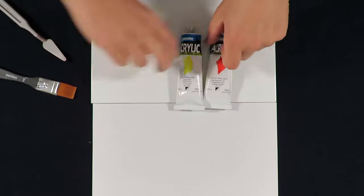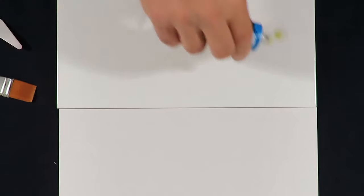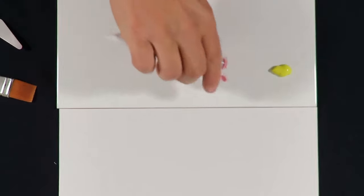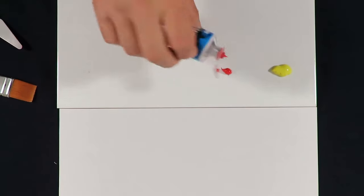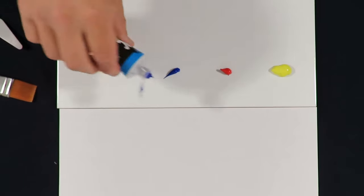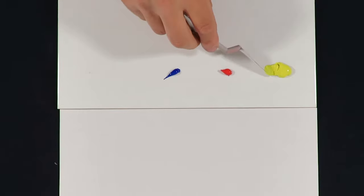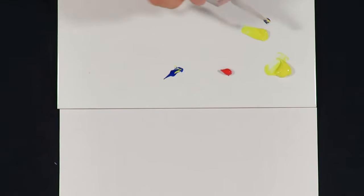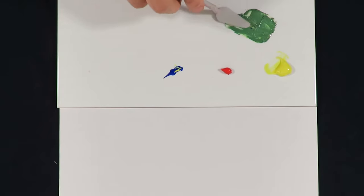So first off we start with some yellow paint, a bit of red, a bit of blue. So we'll mix up some yellow paint with the blue paint to make green. I've got our green there.